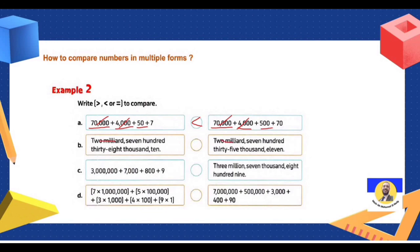Next: two million, seven hundred thirty-eight thousand versus seven hundred thirty-five thousand. Is 38,000 greater or 35,000? 38,000 is greater. Next: three million and three million — the same; seven thousand and seven thousand — the same; eight hundred here and three million, three million, two zeros and eight hundred nine.